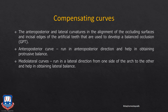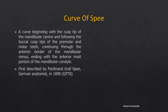Coming to compensating curves: compensating curves are the anterior-posterior and lateral curvatures in the alignment of the occluding surfaces and incisal edges of artificial teeth that are used to develop balanced occlusion. There are two categories: anterior-posterior curves and medial-lateral curves. Anterior compensating curves like the curve of Spee run in the AP direction and help obtain protrusive balance, whereas medial-lateral compensating curves run in the lateral direction and help obtain balance in lateral excursive movements.